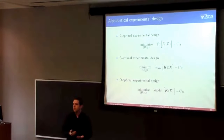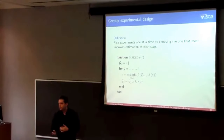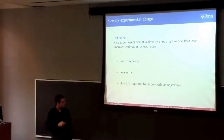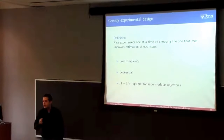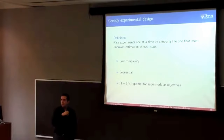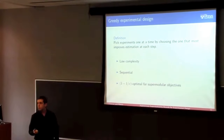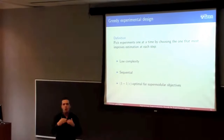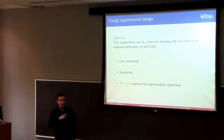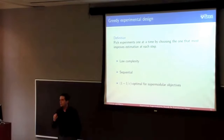The way people approximate solutions in practice is by using greedy experimental design — picking experiments one at a time, always choosing whichever most improves your objective function. We like greedy because it has low complexity: compared to the exponential time needed to solve exactly, it's much better — actually very close to linear. There are even linear randomized versions of greedy. They are also sequential, so you can stop at any point when performance is good enough. And they are near-optimal when the objective is supermodular, achieving within 1 minus 1/e (approximately 0.63) of the optimal value.